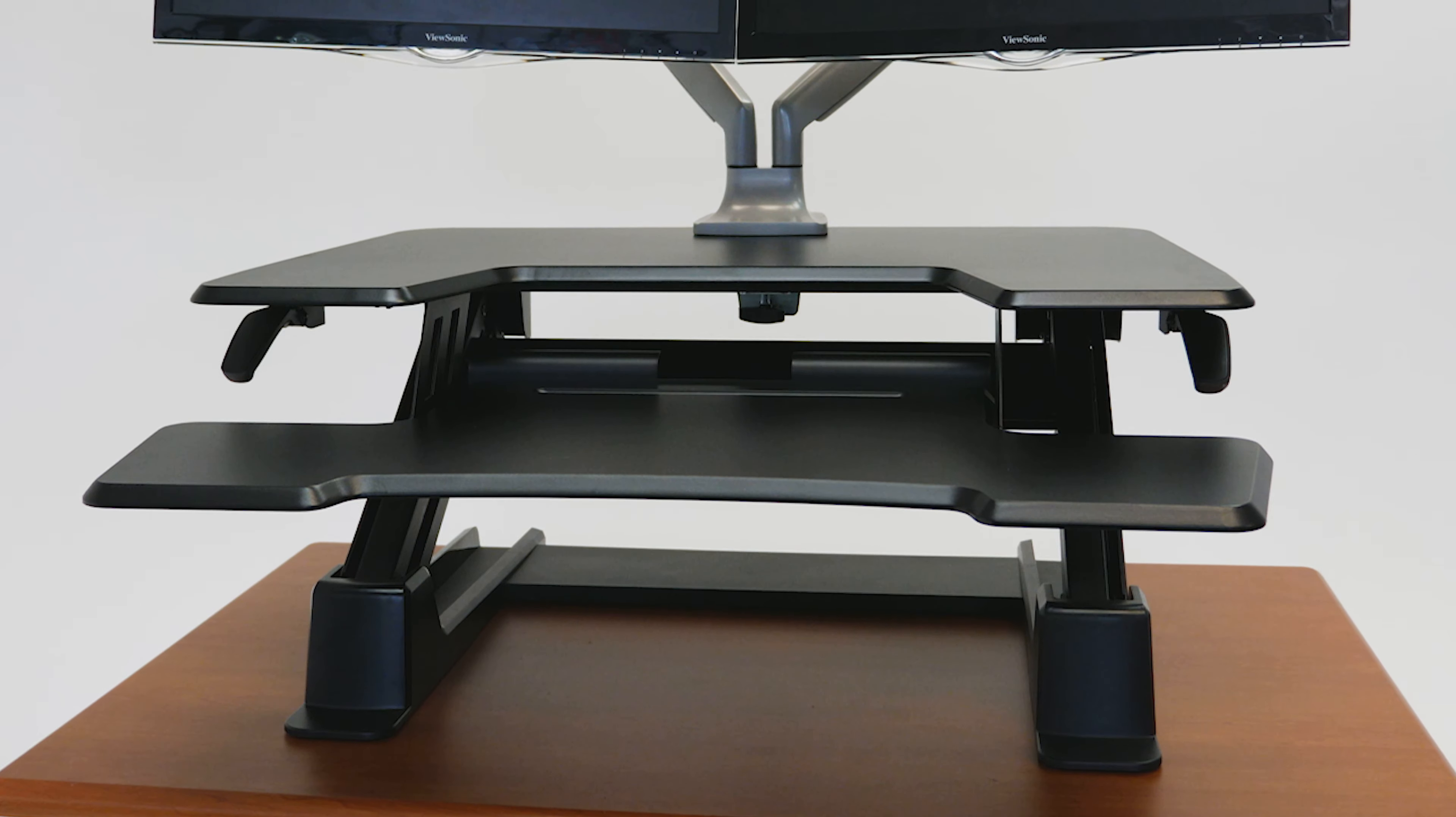At $399, this model is Eureka's best-selling Z-Lift option. As a member of the Z-Lift family, its frame takes the shape of a Z when it's raised to standing height.